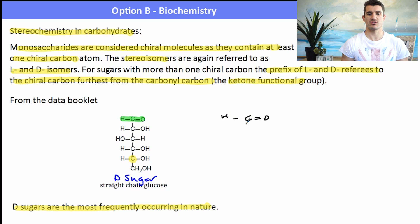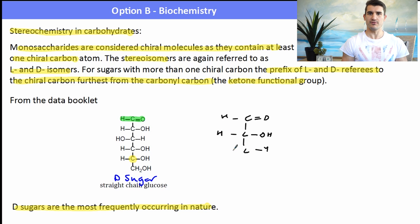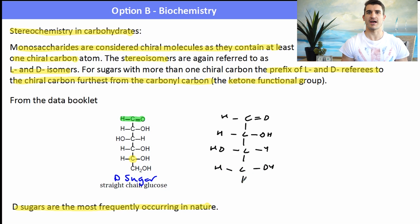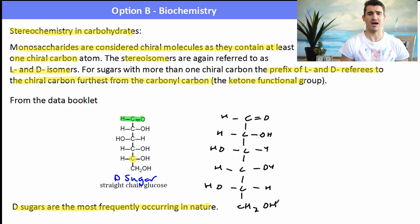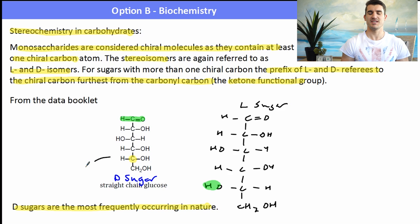D sugars are the most frequently found in nature. You could be asked to draw the L sugar for glucose - all you do is copy it from the data book and remember that it's the last chiral carbon where the OH is now on the left-hand side. The trick is: L meaning the OH on the left-hand side. We would call one L glucose and the other D glucose.